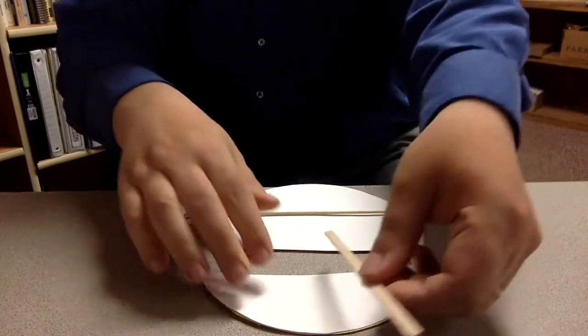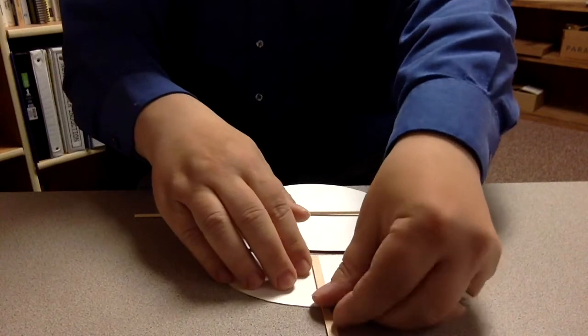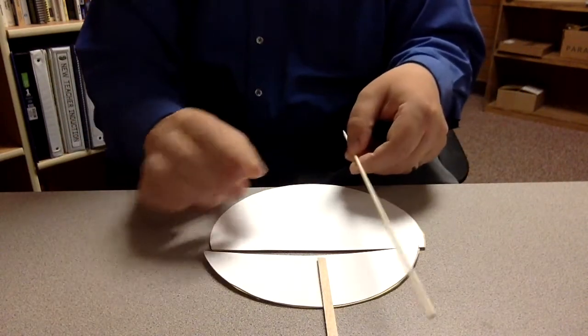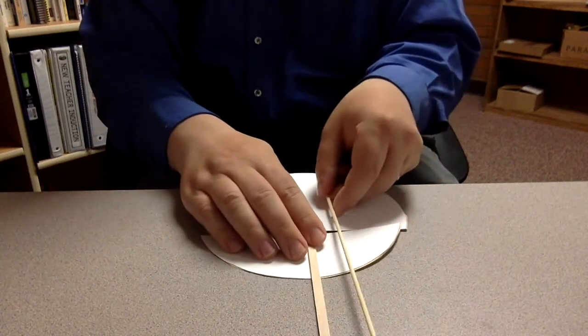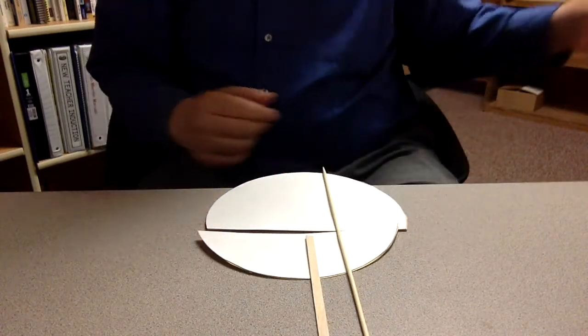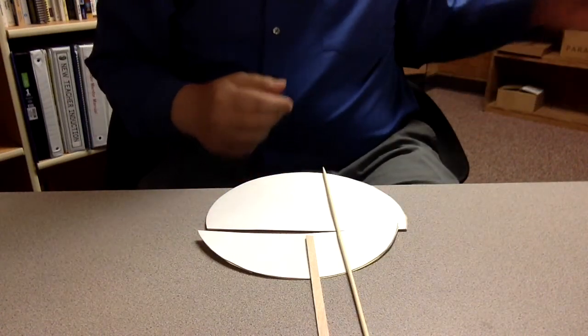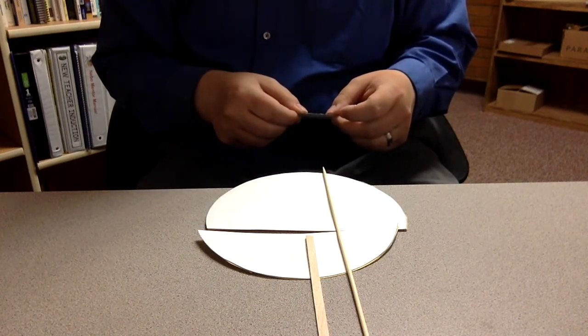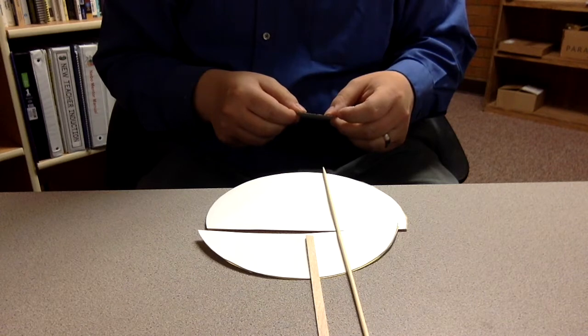So the craft stick is going to be attached to the bottom, and the skewer is going to be attached to the top part. And I like to use duct tape when I am putting this together because it's a really strong tape that's going to keep those on there and keep them from slipping.